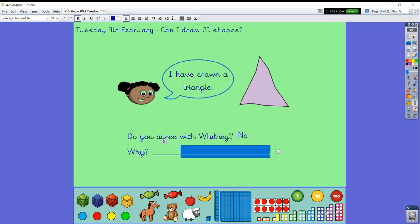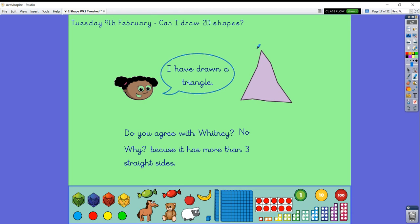I am going to put no. And I'm going to say why? Because it has more than three straight sides. Because if I have a look carefully, I think there's one side that goes from here to here and then one that goes from here to here. I think she's got lots of sides because where it changes direction, that's a corner or a vertices.